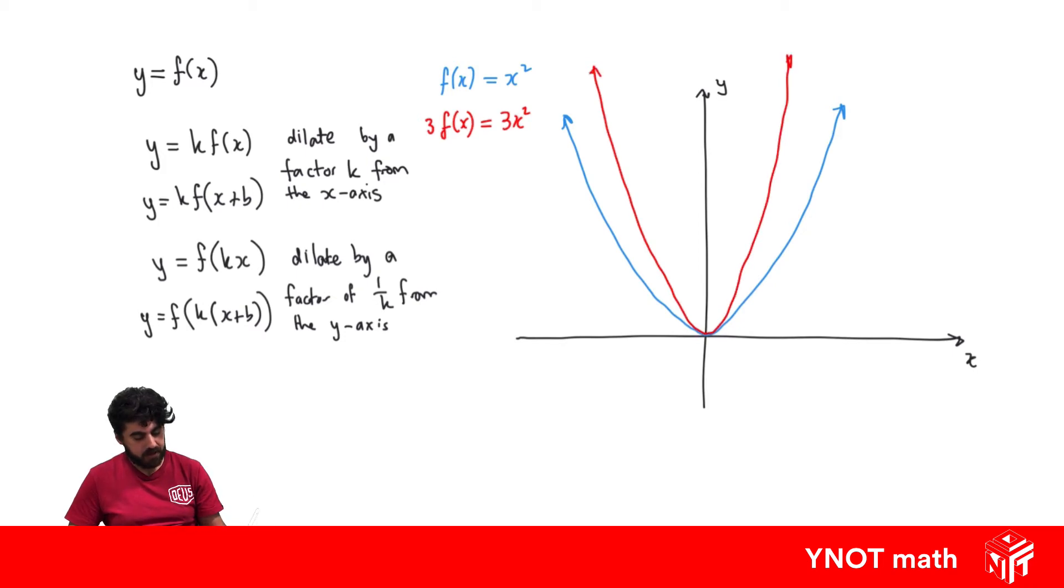Let's look at our last case where we're substituting our x for a factor of k times x. In this case, we'll look at f of 3x, which gives us 3x all squared, which equals 9x squared.